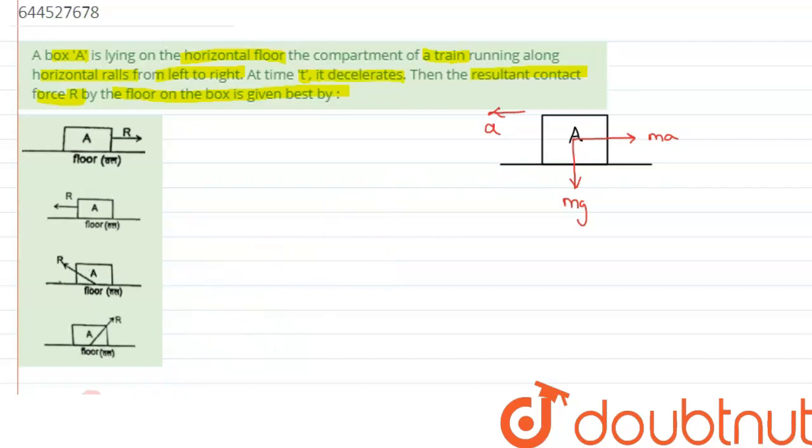From here we can say one thing. As we can see clearly, initially it's been given the train is moving from left to right and after some time it starts decelerating.